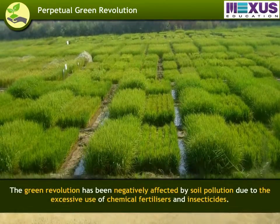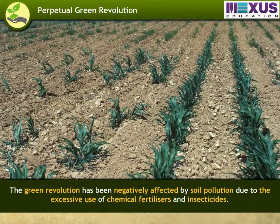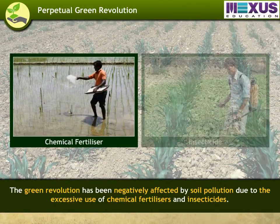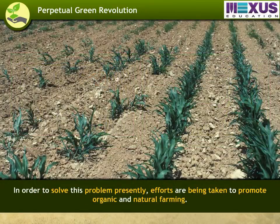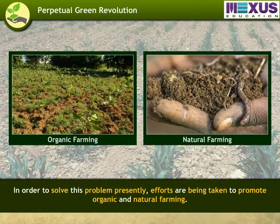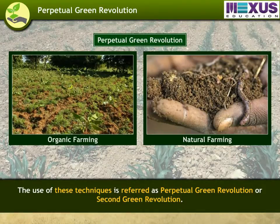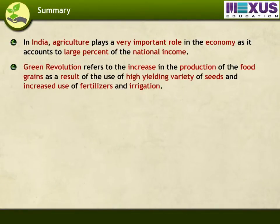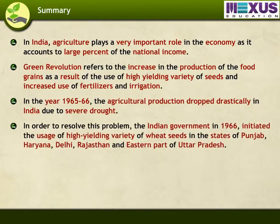The Green Revolution has been negatively affected by soil pollution due to the excessive use of chemical fertilizers and insecticides. In order to solve this problem, efforts are being taken to promote organic and natural farming. The use of these techniques is referred to as the perpetual Green Revolution or second Green Revolution. Let us now recap all the important points covered in this module on the Green Revolution.